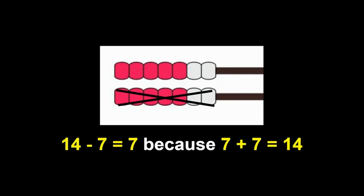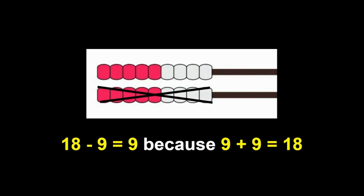You're using addition to show what you know about subtraction. Here's another one. How many did you see? Think about how many were on the top and how many were on the bottom. Take away nine. How many are left? Nine. 18 take away nine equals nine because nine plus nine equals 18. I know all of these have been doubles so far — you can use your doubles to help you do subtraction when it's a double.